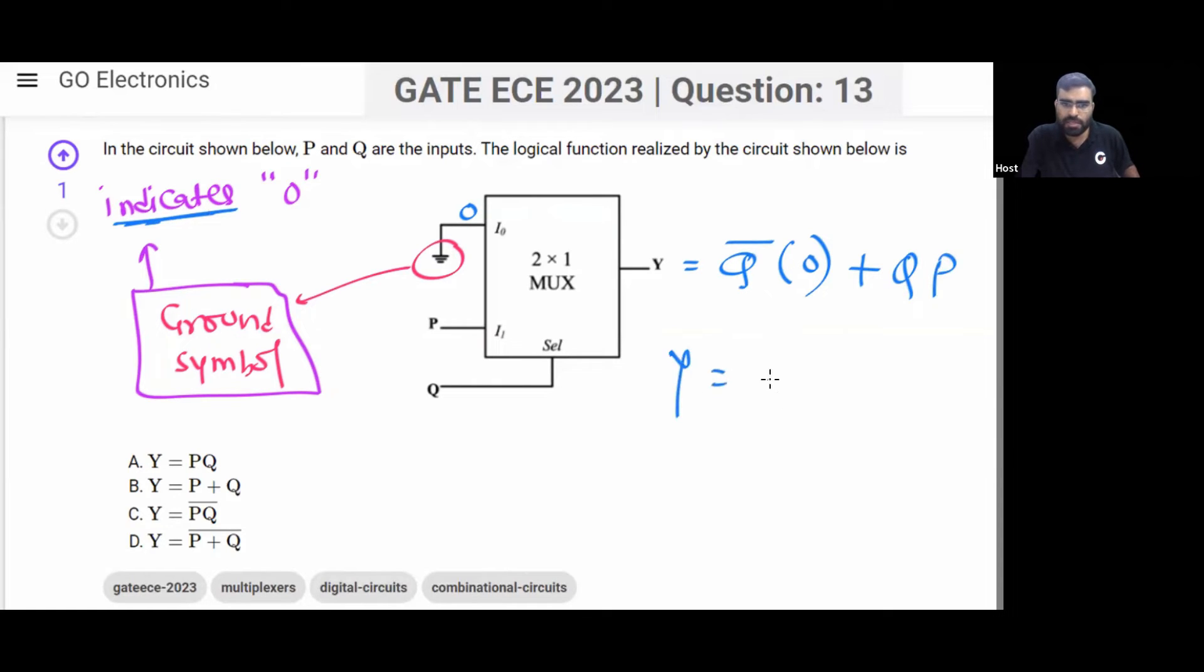From here you can see that your final answer is PQ. Your final answer is PQ, so your answer is option A. Because please understand, you have this 2 by 1 multiplexer. On the select line, the variable Q is there. You have connected this variable Q to the select line.